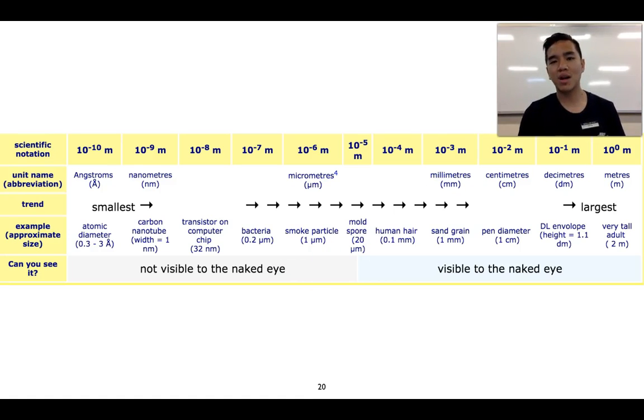But because we're talking about nanomaterials, we're looking down this end here. So 10 to the minus 9 meters, what we call a nanometer. And we're looking at nanomaterials like carbon nanotubes that fit in this scale here. So that would definitely be invisible to the naked eye.